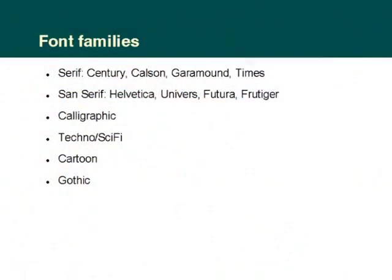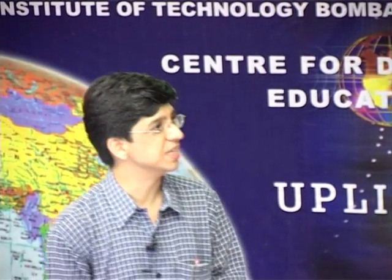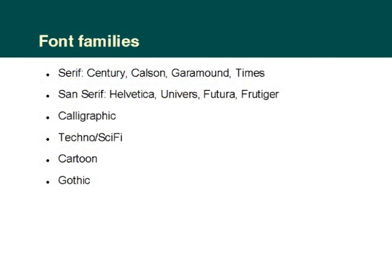Setting the examples aside, let us go into some detail of what typography is all about. We have different font families, which can be categorized into serif fonts and sans serif fonts — these are the two main categories. Popular serif fonts include Century, Carlson, Garamond, Times, and Palatino. Sans serif fonts include Arial and many others. Apart from these two, there are calligraphic fonts that look almost like handwritten fonts, technical or science-fiction-based fonts that look futuristic, digital fonts, cartoon fonts, and gothic fonts used in very early ages.